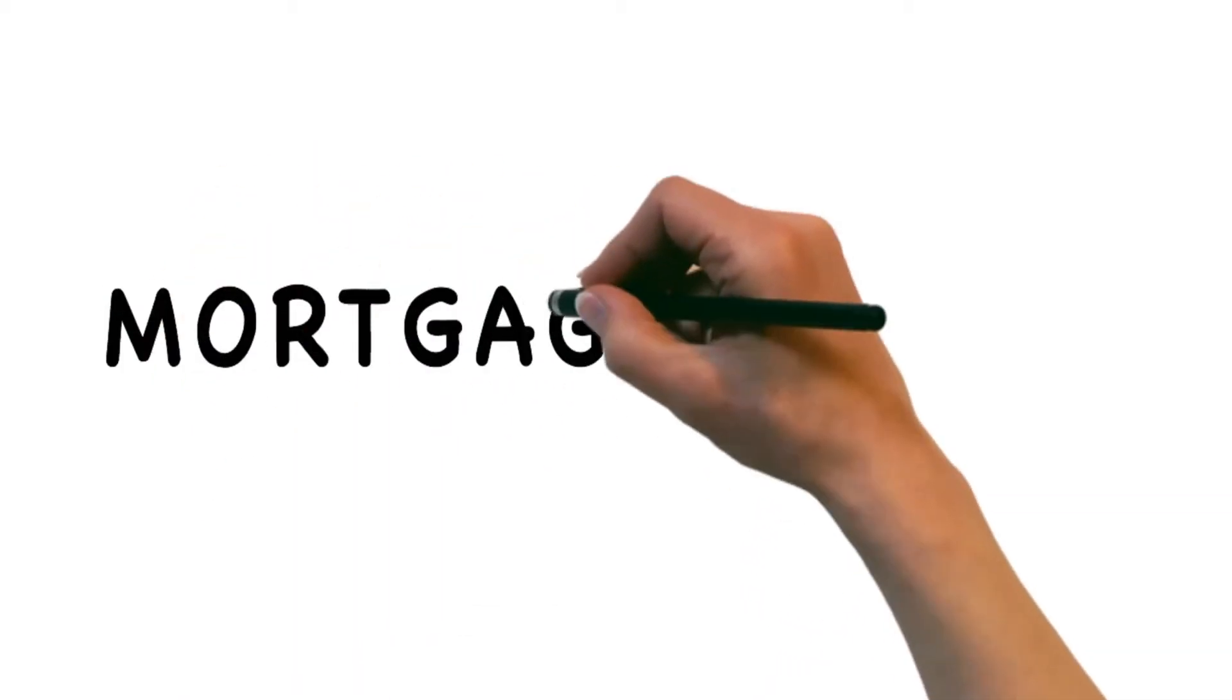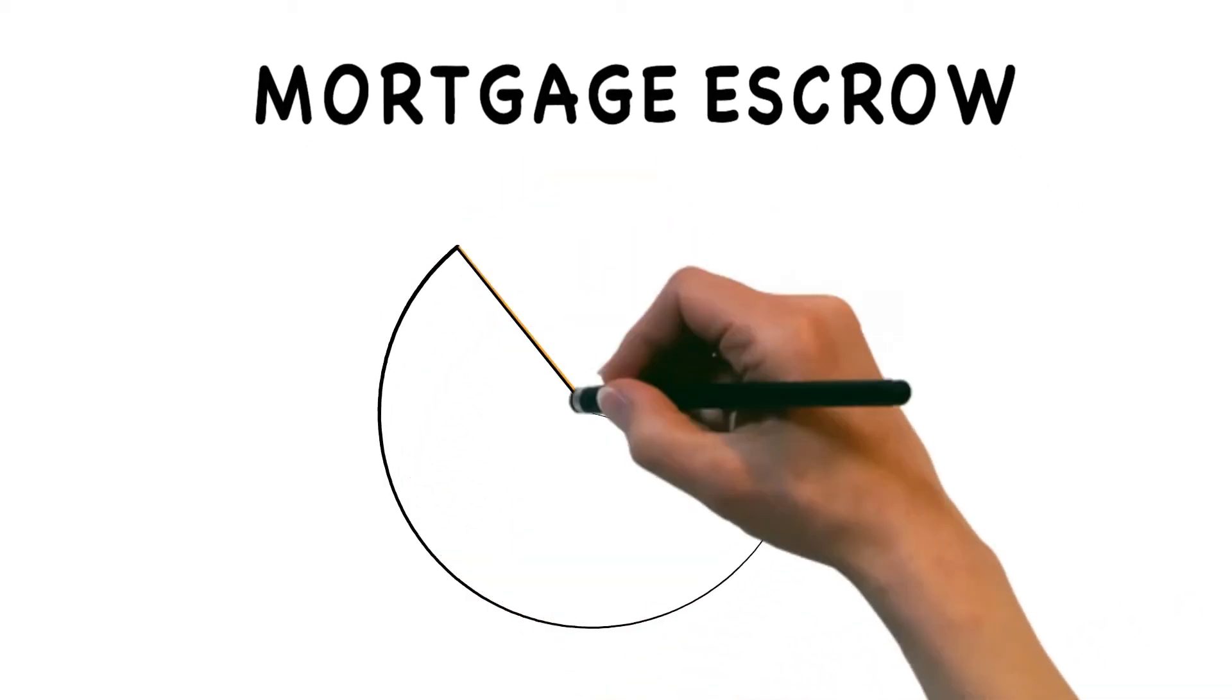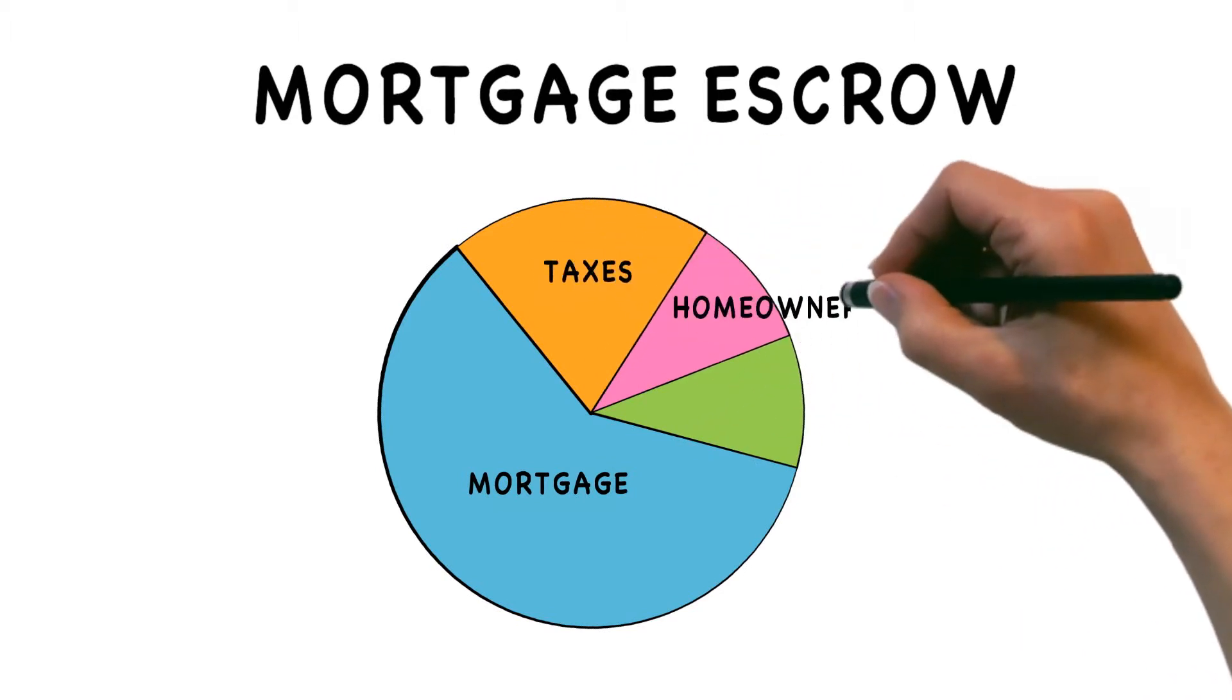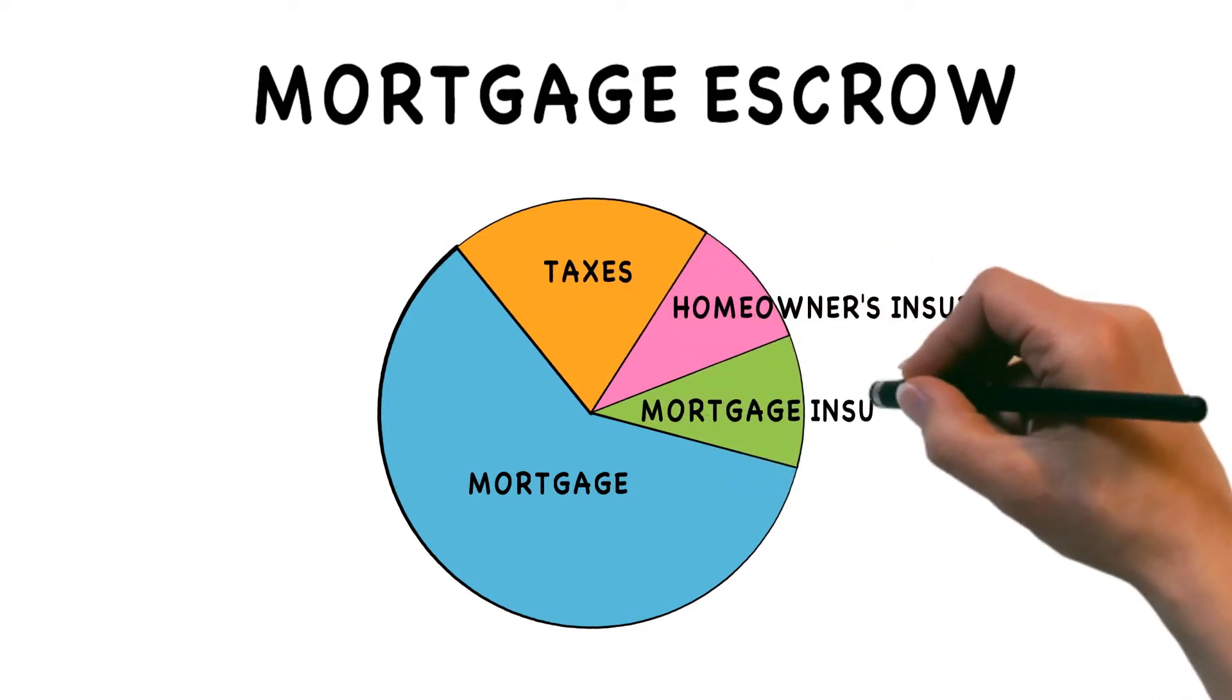At closing, the lender will also collect money to put into your mortgage escrow account. A mortgage escrow account is used by your lender to make payments on your behalf for real estate taxes and premiums for homeowners, mortgage, or other insurance.